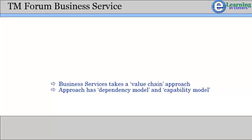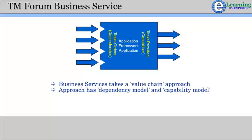In contrast to SOA, TM Forum Business Services takes a value chain approach, where an application not only declares the services it offers, but also declares the services it is dependent on. The approach has a dependency model as well as a capability model found in SOA. The result is that the systems architect can assemble a value chain of components into a solution, where each application is optimally sized to deliver the demand on them.